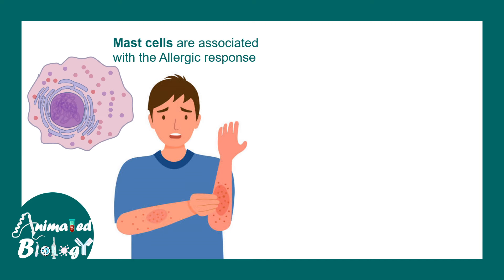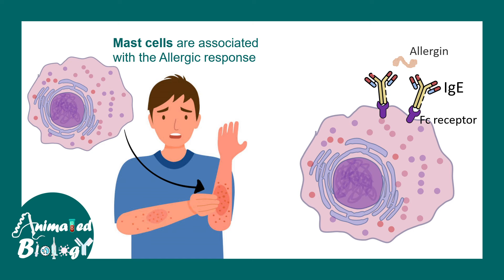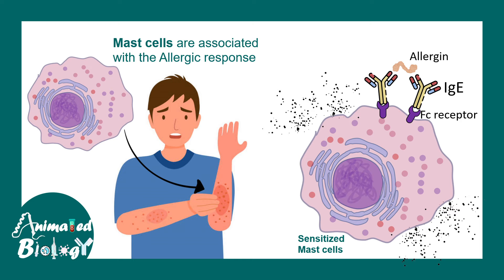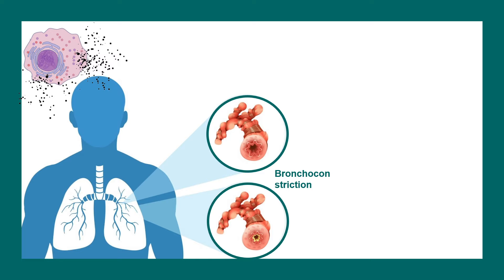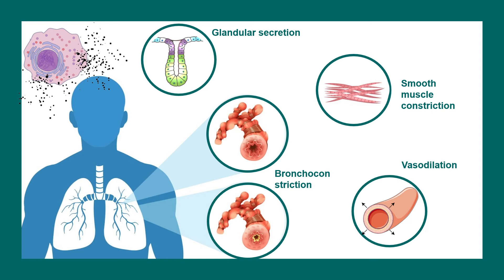Mast cells are highly associated with allergic responses. Mast cells have specific receptors known as FC receptors, which can bind to IgE antibodies. Whenever there is an allergen-mediated exposure, mast cells get sensitized and they degranulate, releasing several allergic mediators. There are many physiological outcomes of mast cell degranulation, like bronchoconstriction, increased glandular secretion, smooth muscle constriction, and vasodilation.